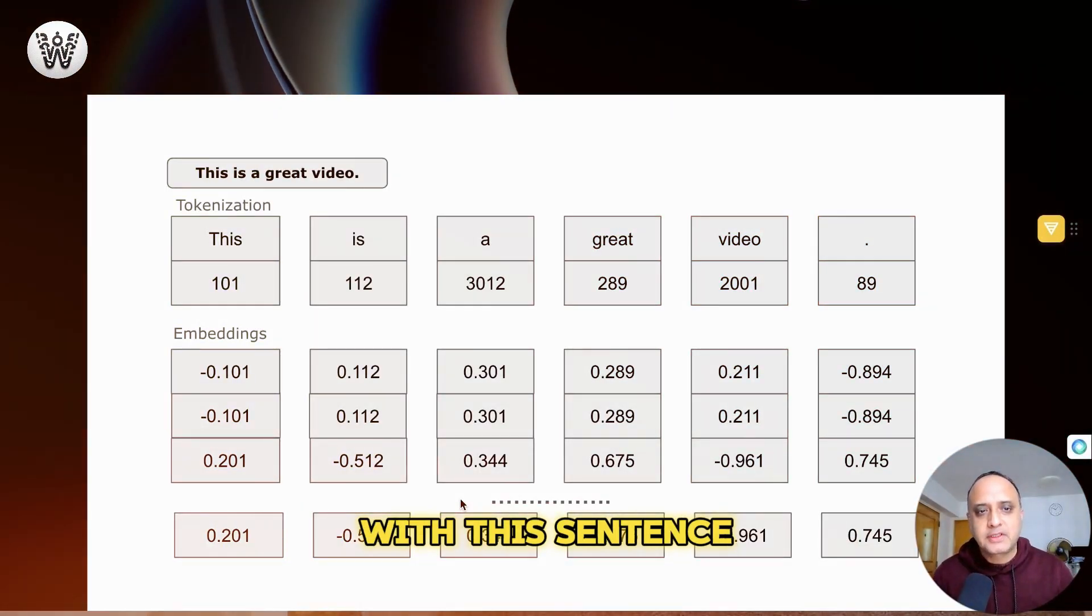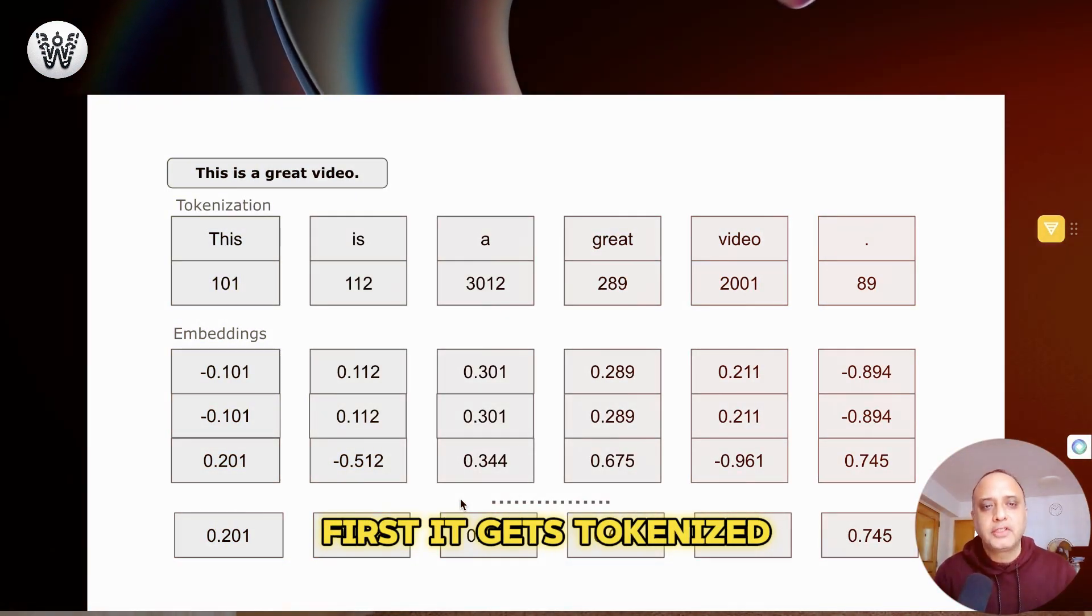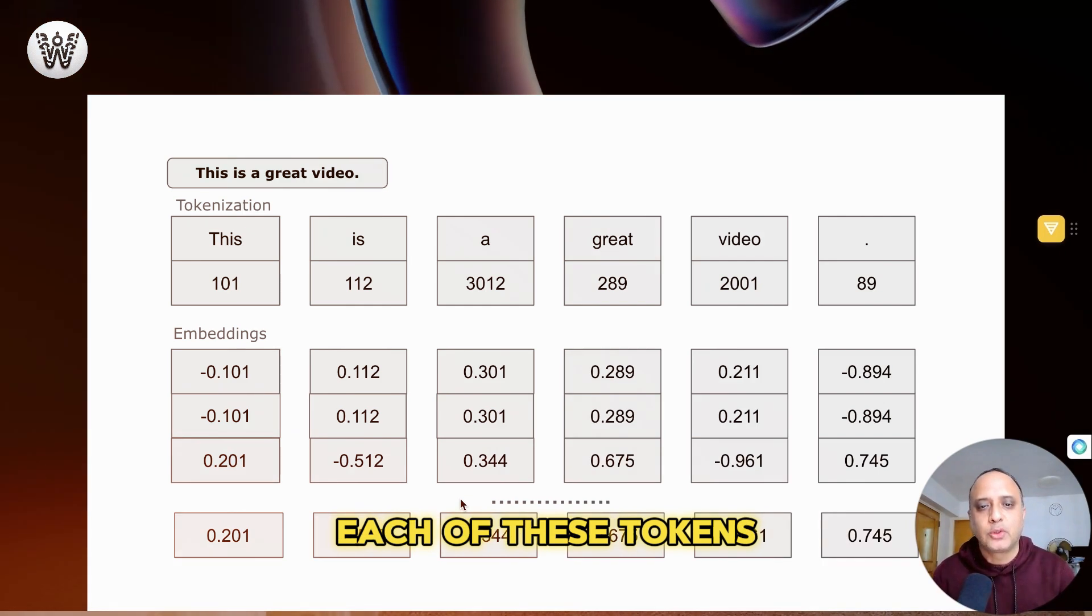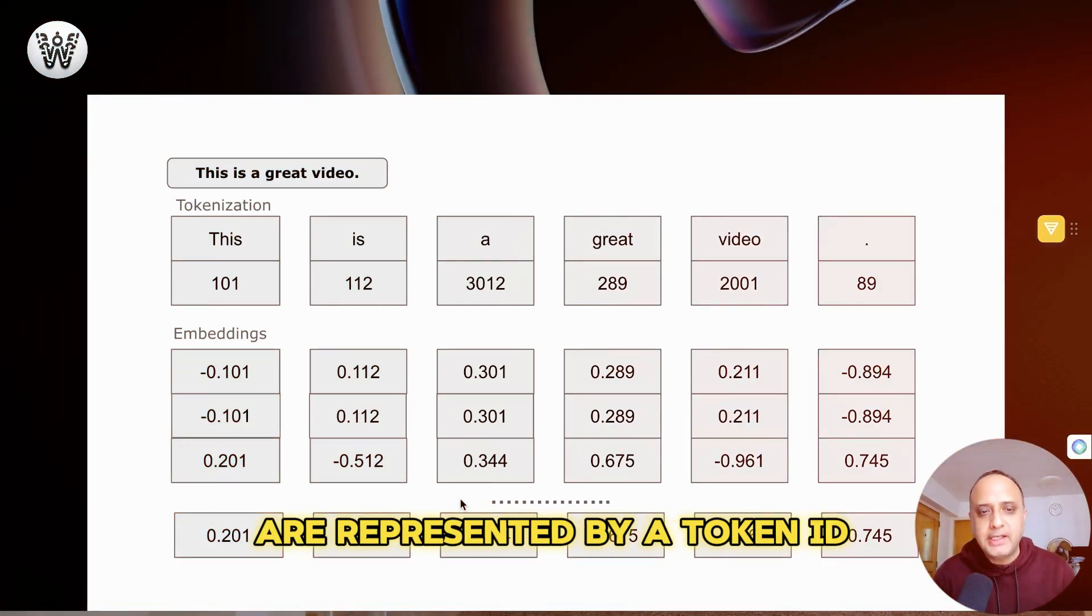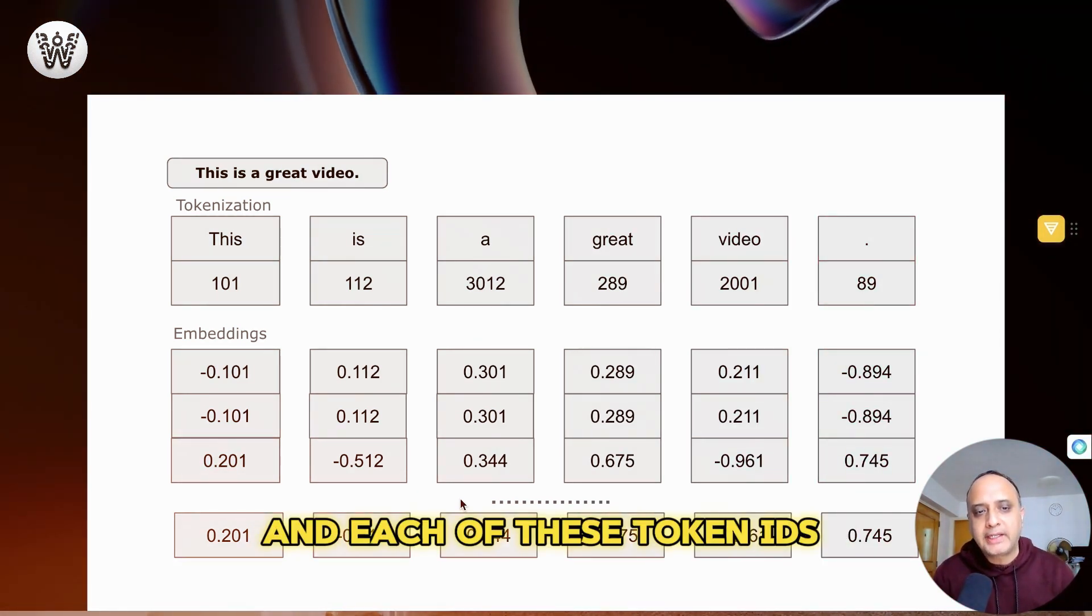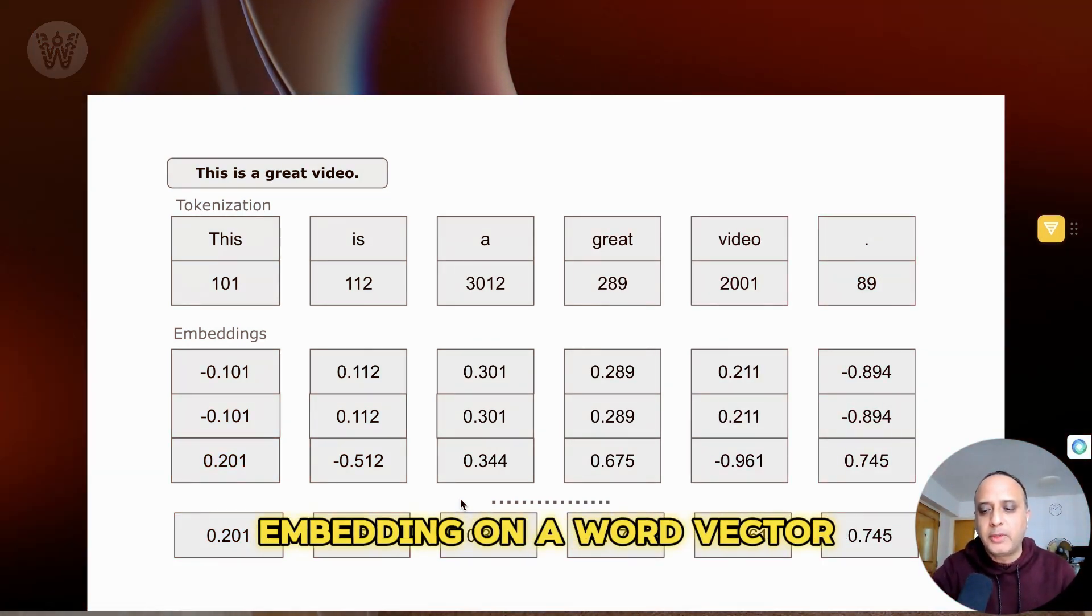Let's sum up our understanding with this sentence: This is a great video. First, it gets tokenized. Each of these tokens are represented by a token ID, and each of these token IDs is then mapped into a word embedding or a word vector.